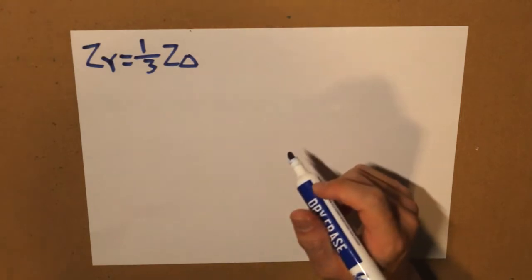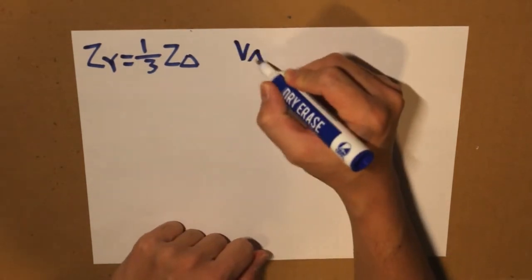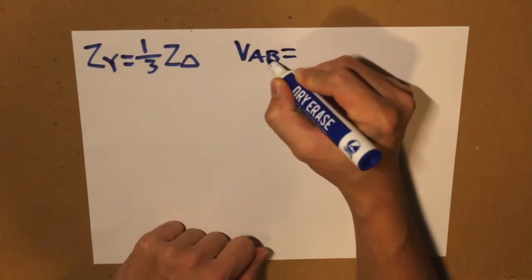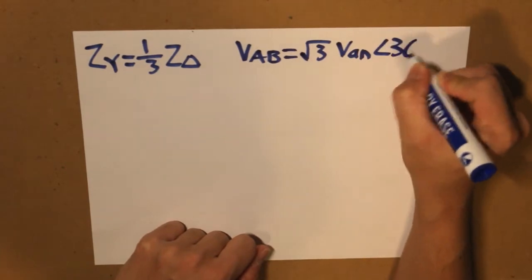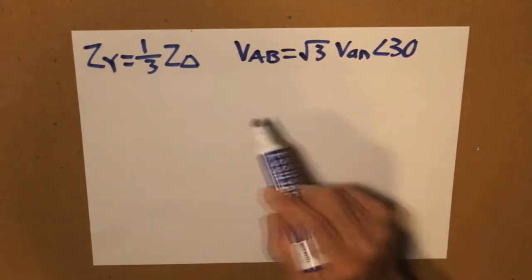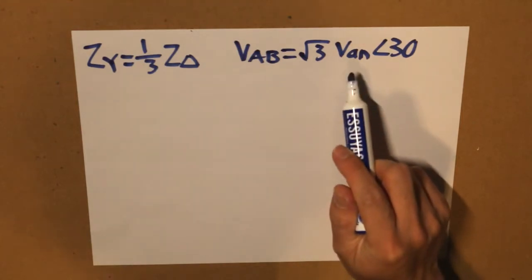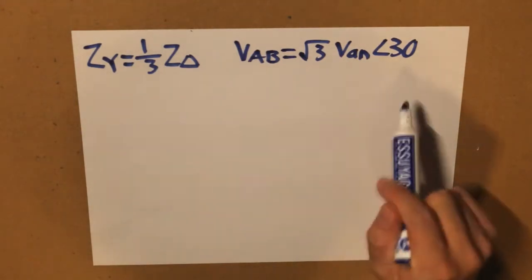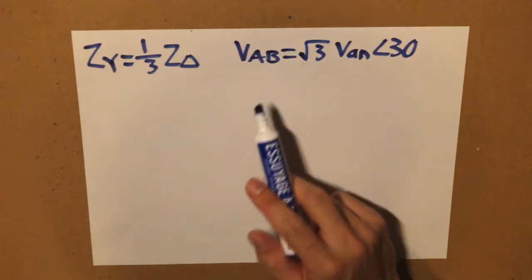And for our voltage, that is simply this. So what we do is we take the Y voltage this time, incline it by 30 degrees and multiply by square root of 3 and what we get is the delta voltage.